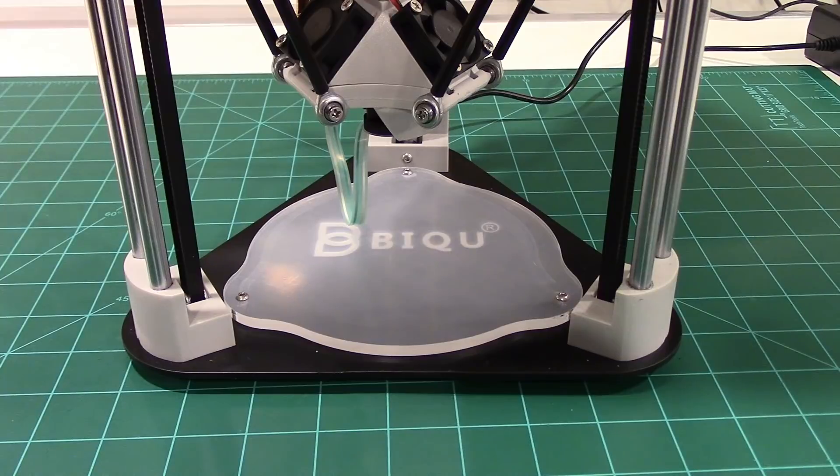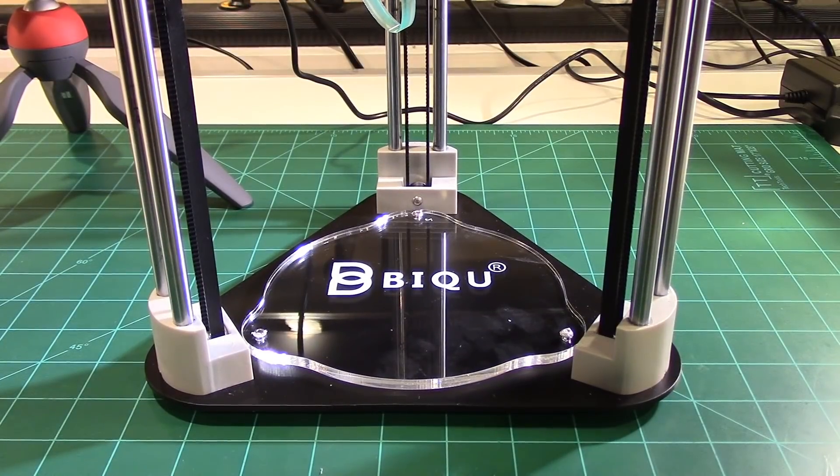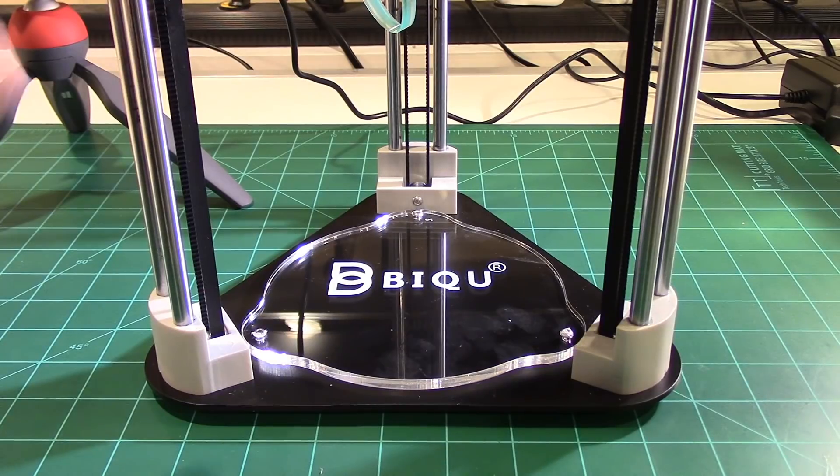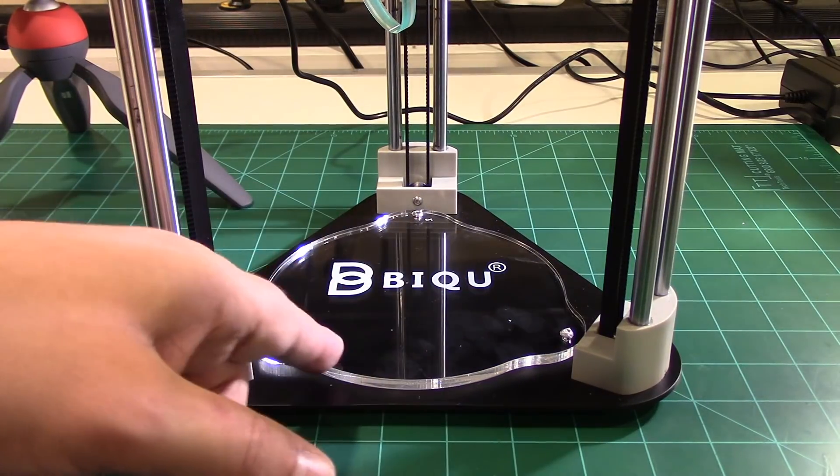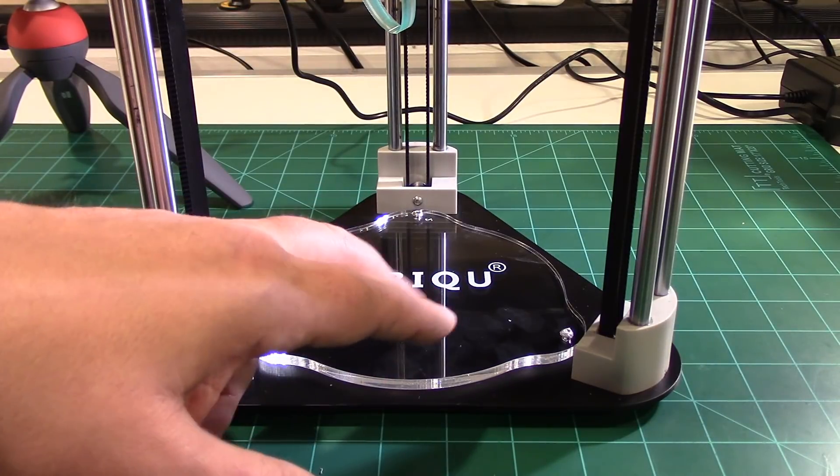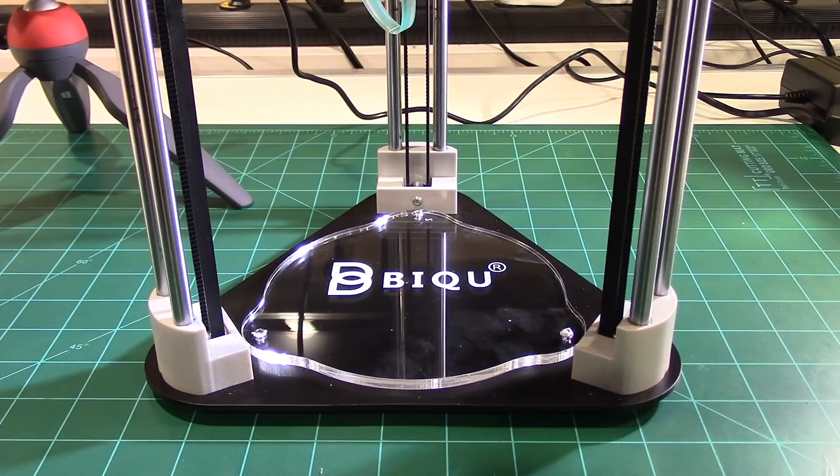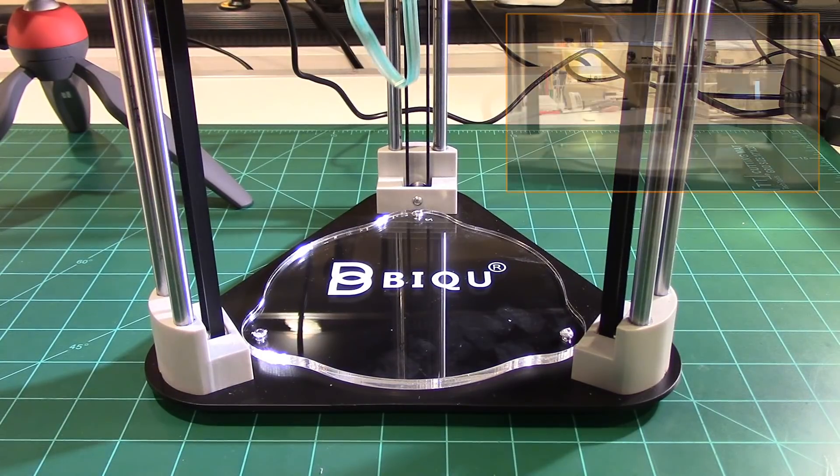Now I'm going to go ahead and activate the power. Oh one of the other things, make sure you remove the protective cover from the bed, there's a real thin plastic cover that goes on here you need to remove. And then what I'm going to do is I'm going to press the leveling button.